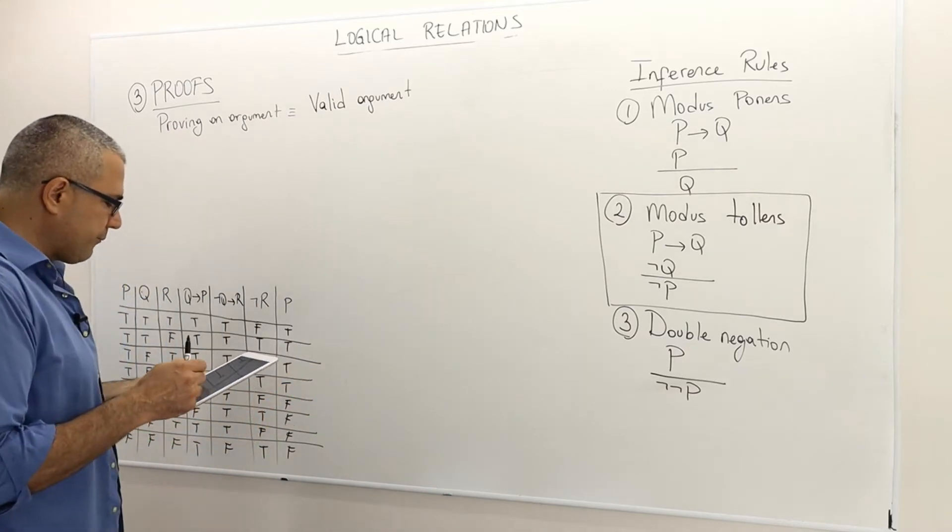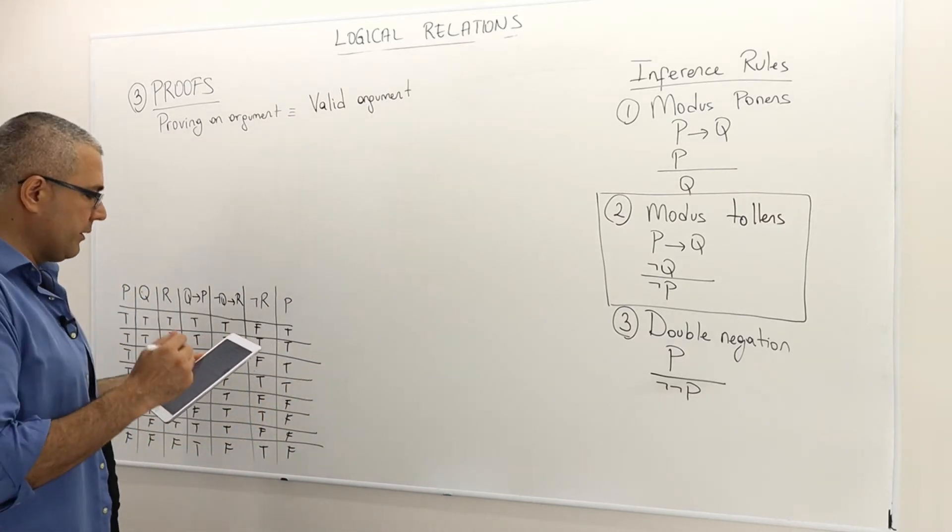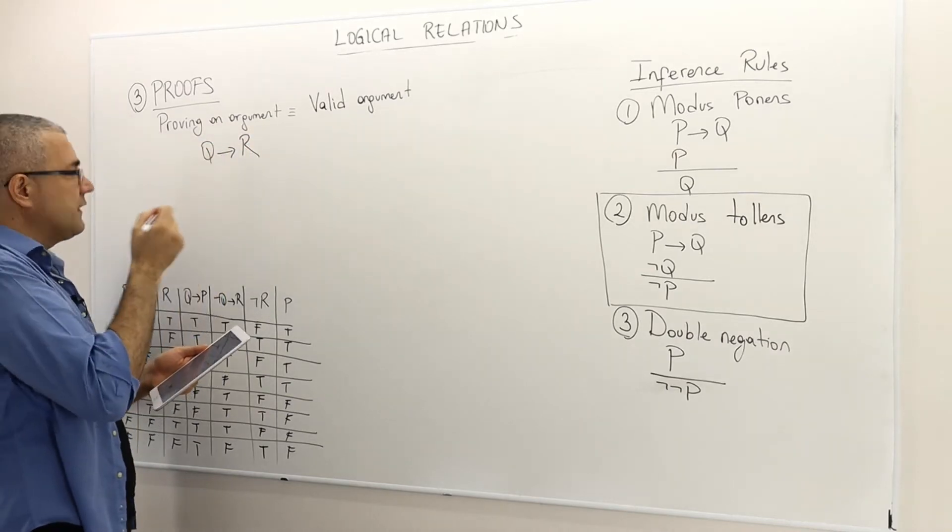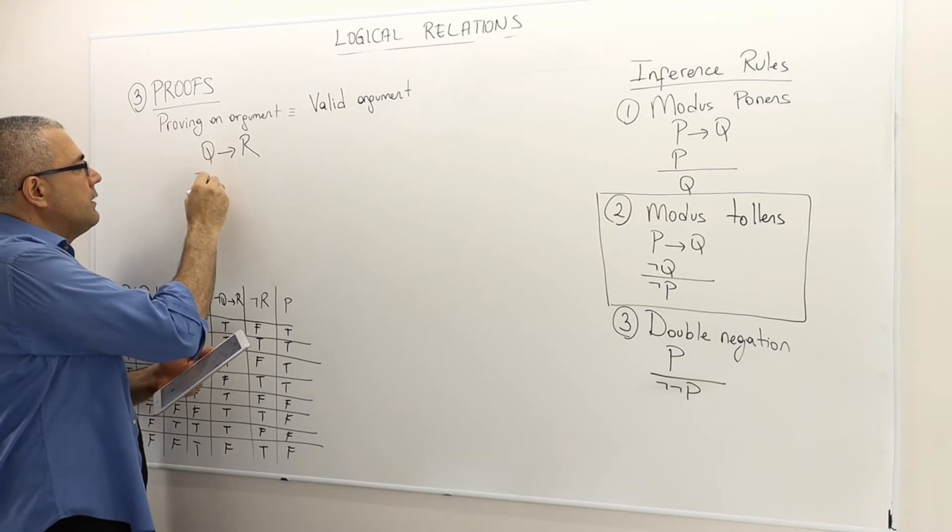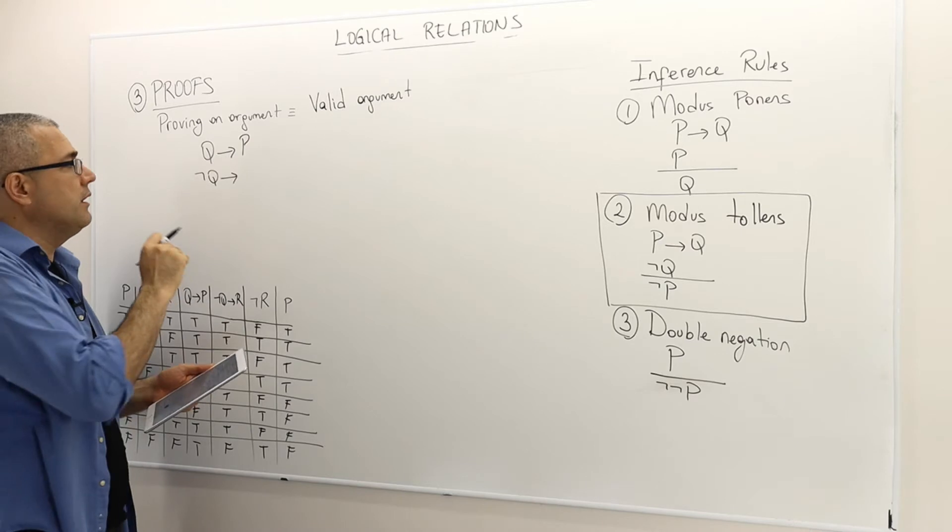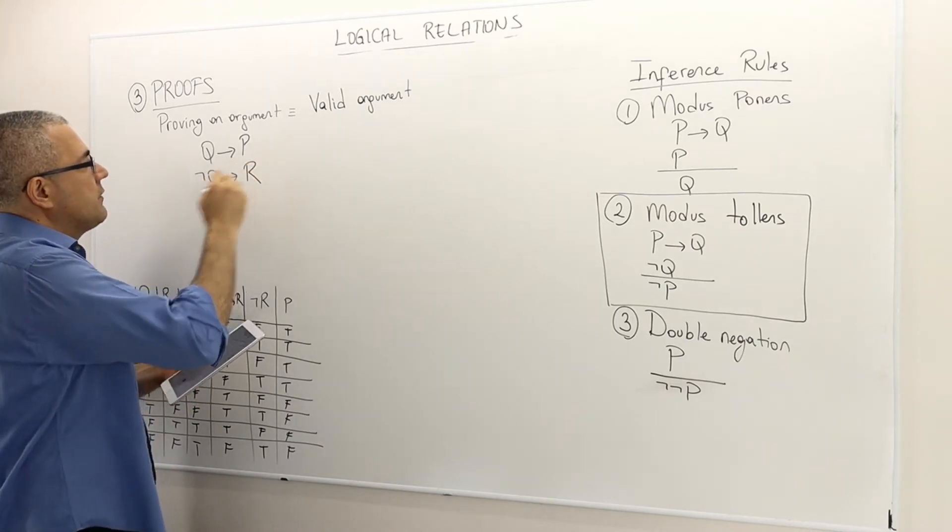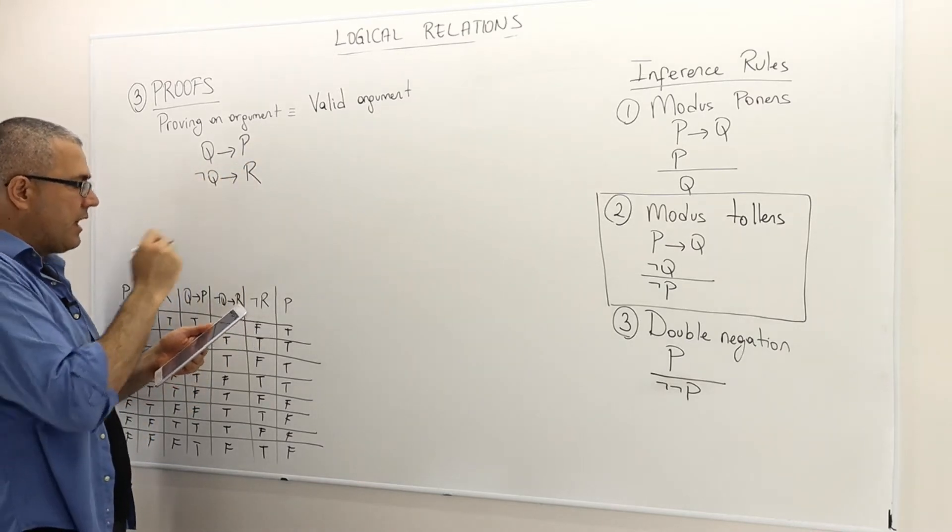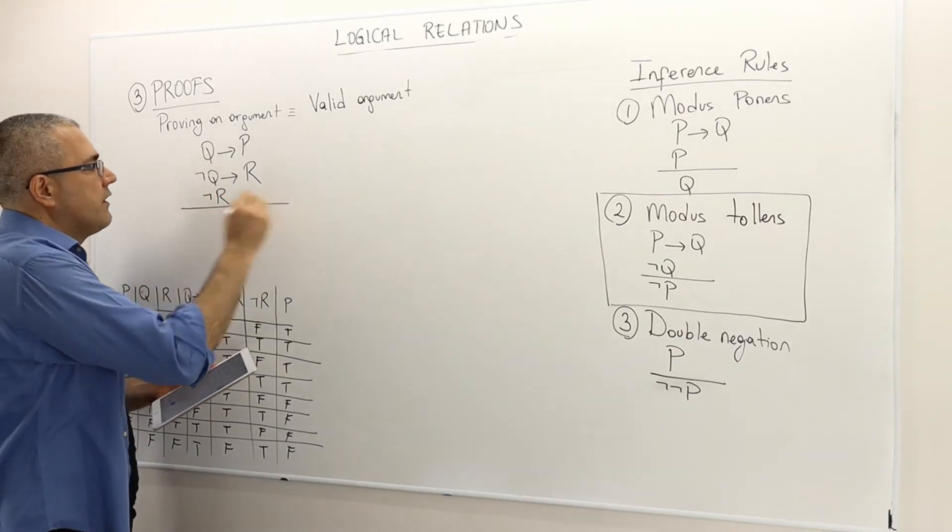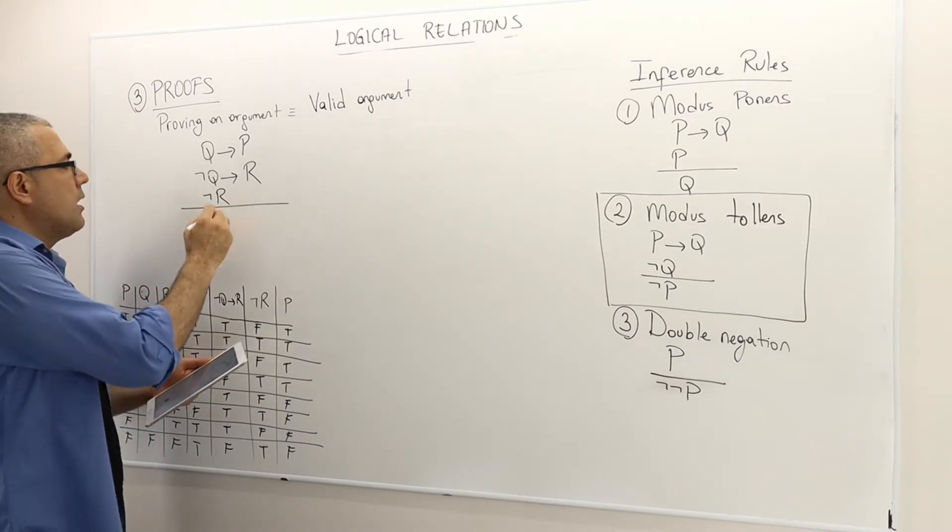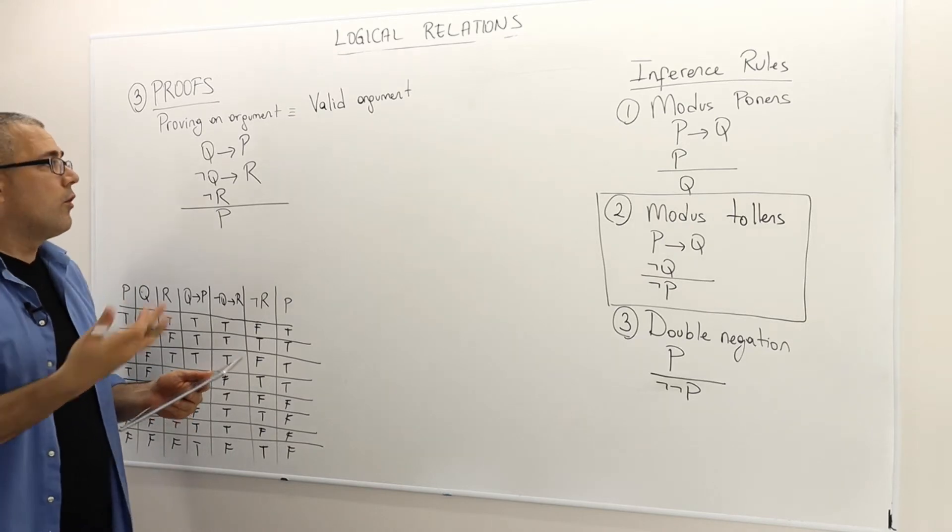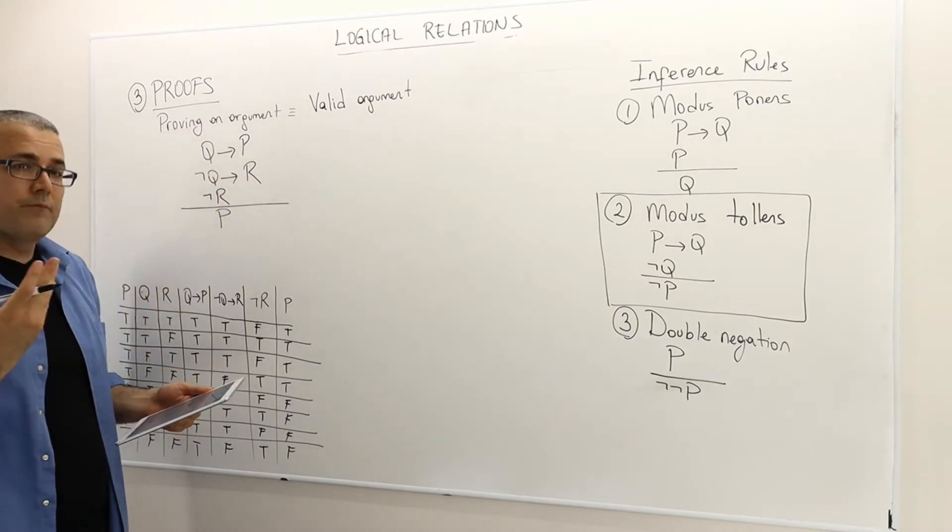So I'm going to consider the following argument as an example. Q implies P, this is premise number one. Not Q implies R, this is my second premise. And then the third premise is not R. So suppose all these three premises are correct, true. Well then the conclusion is P. Is it the case that P is also true? Or is this a valid argument? How can I prove that?